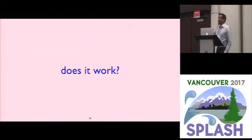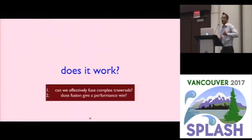So in the last few minutes, I want to answer the following question. Does it work? Can we actually do this? Right? And so there's two questions that I want to answer. One is, can we effectively fuse complex traversals? Can we take complex traversals and fuse them together in a way that actually gives us some fusion benefits? We reduce the number of times we traverse the tree. And then also importantly is, okay, great, you reduce the number of times you've traversed the tree. Does it actually speed up your code?